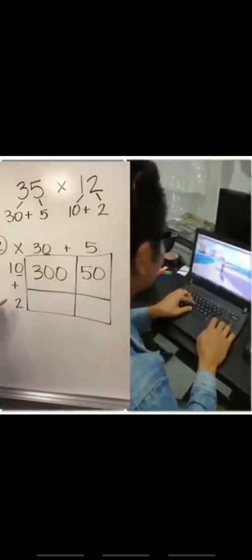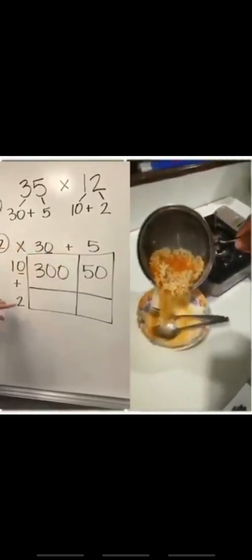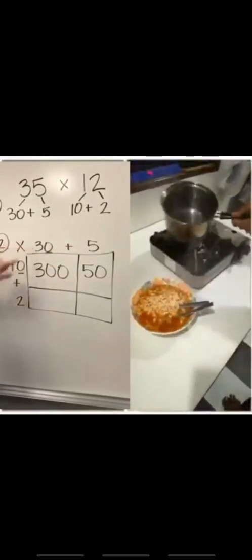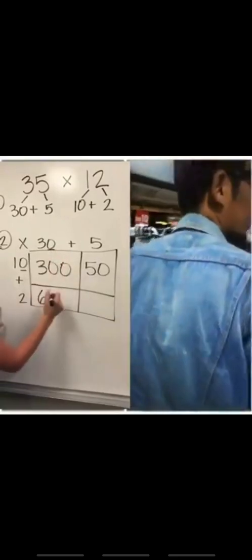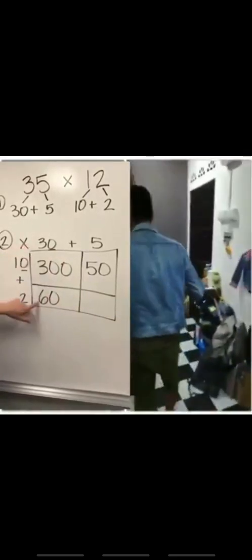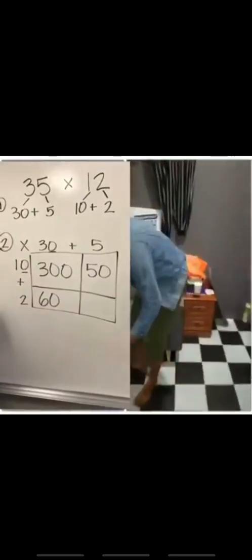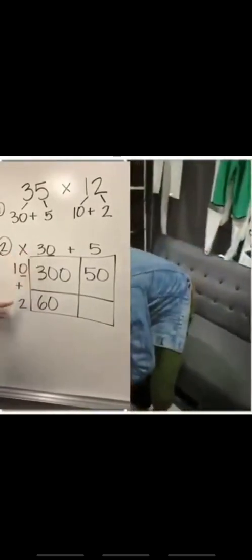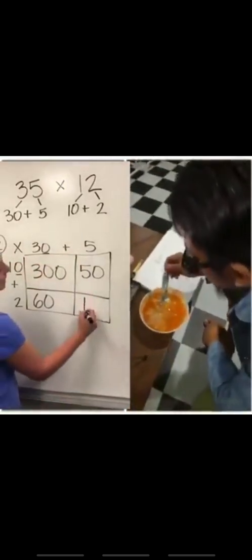And then we do 2. We go down to the 2 because we're done with the 10. 2 times this, 2 times that. So 2 times 30. 2 times 3 is 6, and between both of these numbers I've only got the one zero, so I attach it to the end. 2 times 30 is 60. 2 times this, 2 times that. Now I'm going to do 2 times 5. 2 times 5 is 10.